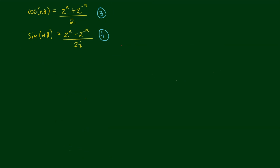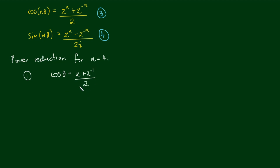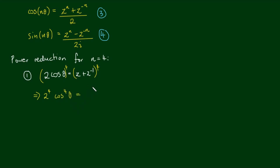Now let's say I want to come up with a power reduction for n equals 4. Taking equation 1, where we had cosine theta equals z plus z to the negative 1 over 2, I'll move the 2 to the other side: 2 cosine theta equals z plus z to the negative 1. Let's raise both sides to the power of 4. On the left hand side we have 2 to the power of 4 times cosine to the power of 4 theta. On the right hand side I'm going to binomially expand z plus z to the negative 1. You can use the binomial theorem; I am going to use Pascal's triangle.